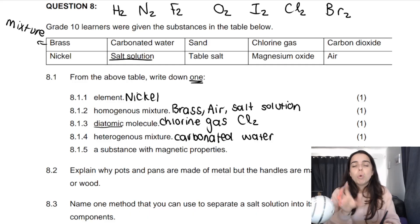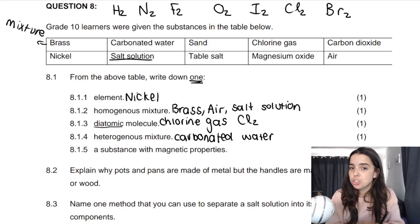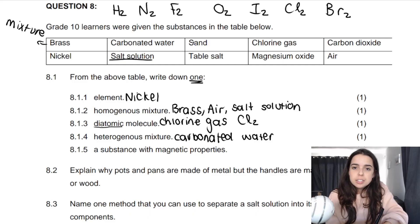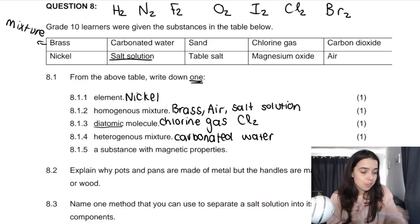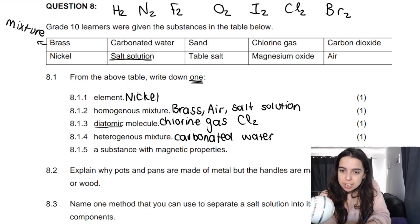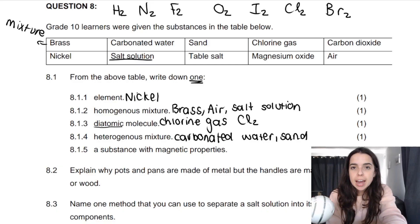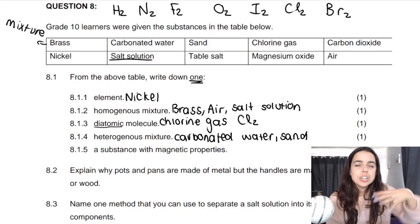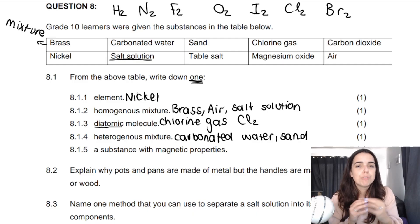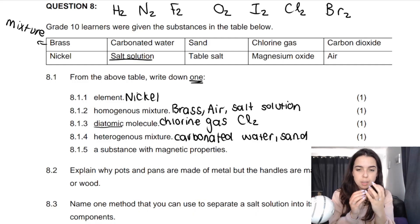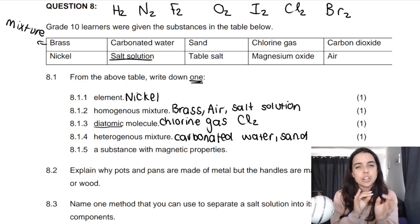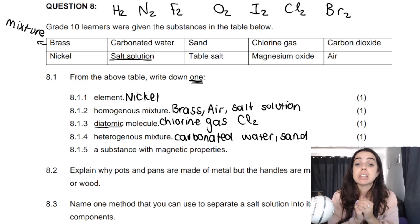Everything else is homogeneous. We said salt solution — all solutions are homogeneous. Sand is actually another heterogeneous mixture. If you look closely at sand, it's a mixture of different types of minerals, rocks, and substances, and if you look carefully you can actually distinguish between them. That would be the best category sand fits into.